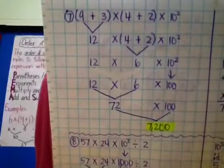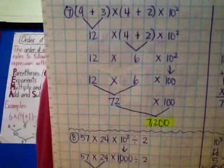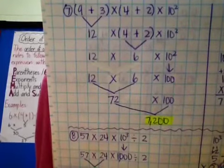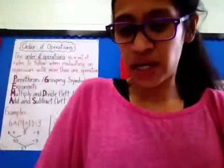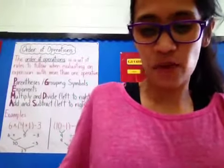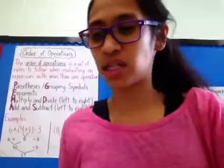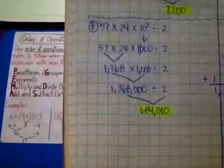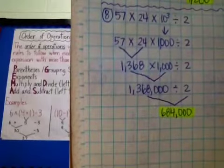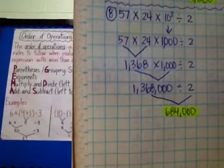For number eight, the answer is 684,000. See right there — 684,000. There's the expression, so remember you're doing the expression on that side and show your work on the other side.